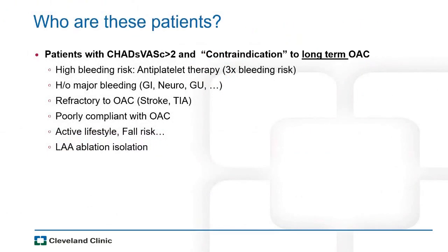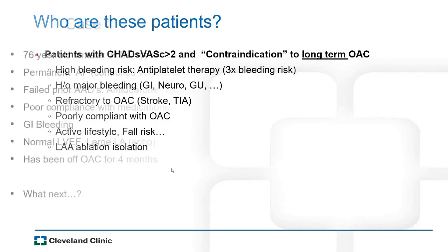Patients considered for Watchman device placement are those with a high CHADS-VASc score — usually greater than two for men, greater than three for women — who have contraindication to long-term oral anticoagulation. This includes patients with GI bleeding, intracranial hemorrhage, or poor compliance with OAC, patients with an active lifestyle who decline anticoagulation, and patients who have had their LAA ablated with resulting stasis and elevated stroke risk despite normal sinus rhythm.